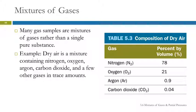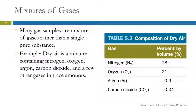We've been talking about gas laws, which describe the properties of a single gas. Now we're going to talk about what happens if you have more than one gas mixed together. Lots of gas samples are mixtures instead of pure substances. Air is a mixture of gases. Dry air — air without humidity or water vapor — is 78% nitrogen, 21% oxygen, a tiny bit of argon, a tiny bit of carbon dioxide, and other gases in much smaller quantities.